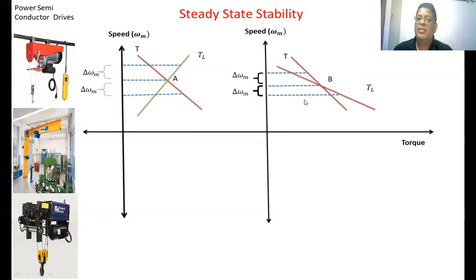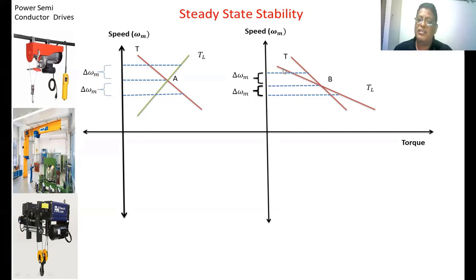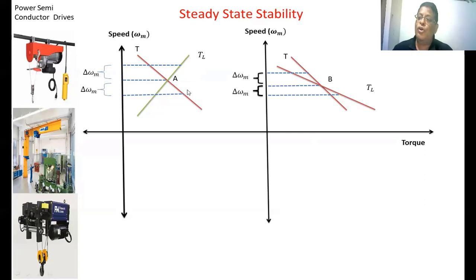So this system becomes an unstable system — this system does not have steady state stability. This is one way in which we can analyze whether the drive system is stable or not at an equilibrium point. In the graphical method, it requires the speed-torque characteristics of the motor as well as the load. In the first case the load torque characteristic is one type and in the second case it is different, and the first case system is stable but in the second case the system is unstable. When the speed is decreasing, if the rate of change of load torque is less than the motor torque, the system is stable.